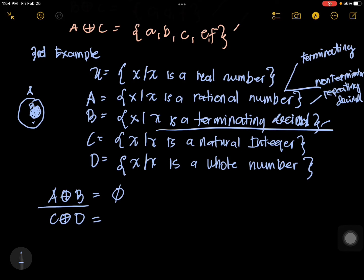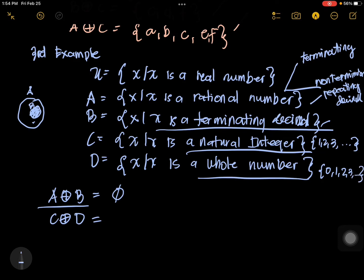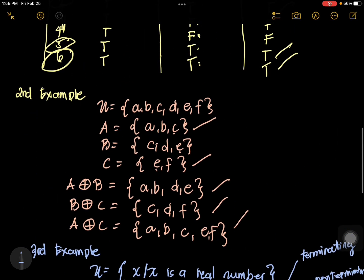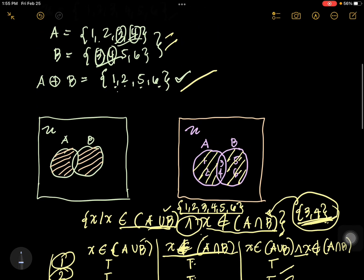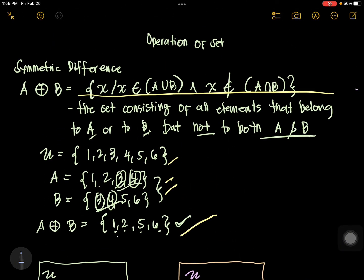So the answer for A symmetric difference B is null. Next, what is the symmetric difference of C and D — natural integers and whole numbers? Natural integers are 1, 2, 3, and so on. Whole numbers start with 0, 1, 2, 3, and so on. Therefore, the answer is just 0, because 1, 2, 3 and so on are cancelled — they are common. What is left is 0. So that is our third example, and that is all under symmetric difference. Feel free to ask questions and let's have our next topic.